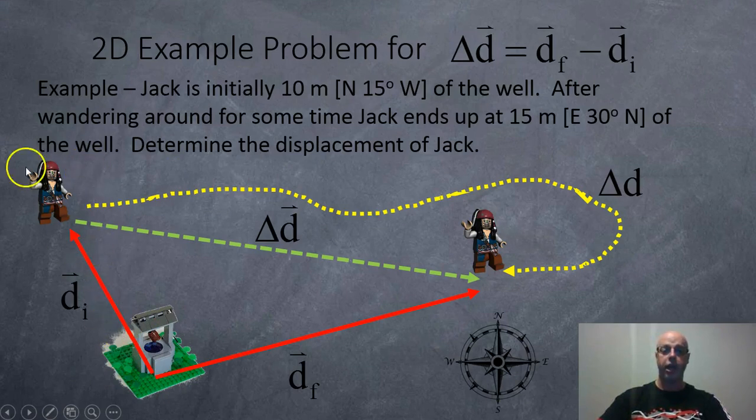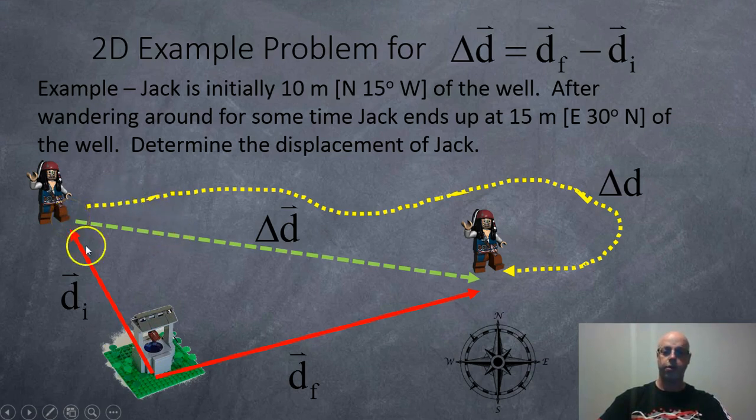Okay, so here we got Jack. Jack's initially way over here, 10 meters north 15 degrees to the west from the reference point. After wandering around for a while following this yellow line, Jack ends up over here which is 15 meters away from the well, facing east and then rotating up towards the north 30 degrees. So we just want to find out the shortcut, this dashed green line here, instead of following this meandering yellow path.